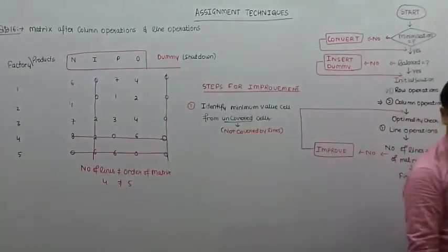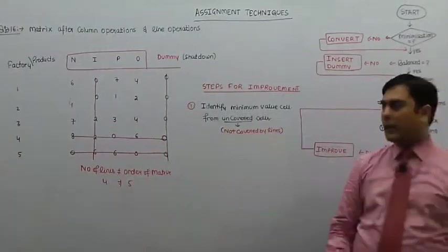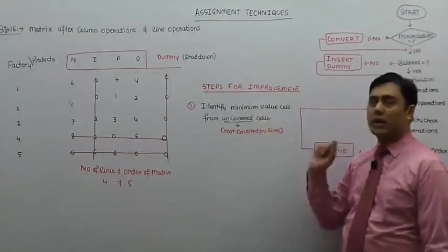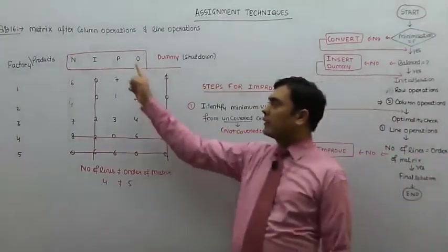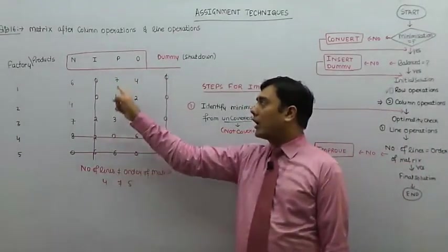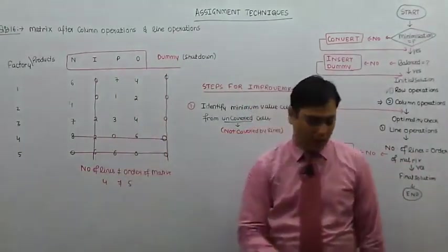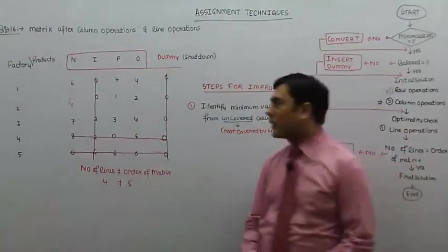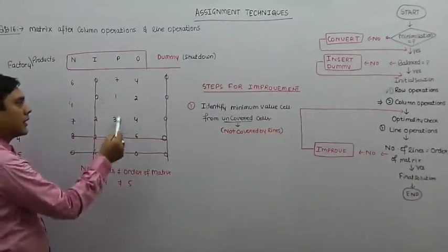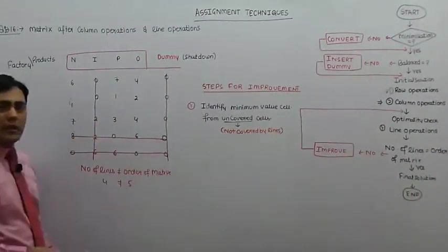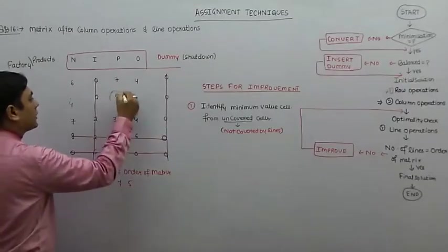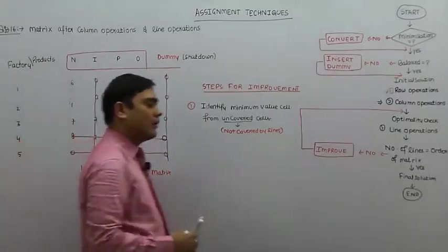So what we have to do: identify minimum value cell from uncovered cells. Is wale matrix me se hume uncovered cells me se minimum value cell identify karna hai. Uncovered cells kaunse hain? 6, 4, 7, 7, 1, 3, 4, 2, 4. In me se minimum value wala cell kaunsa hai? One. Pehla step ye tha — aapko uncovered cells me se minimum value cell identify karna hai.